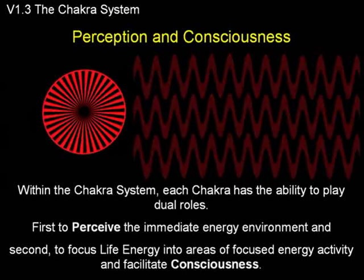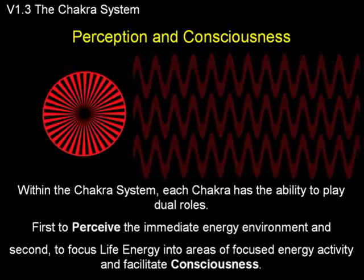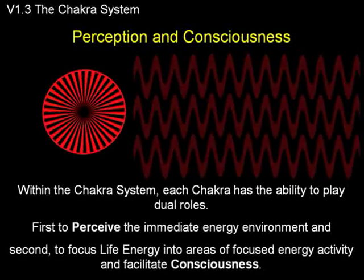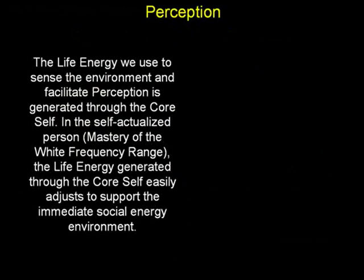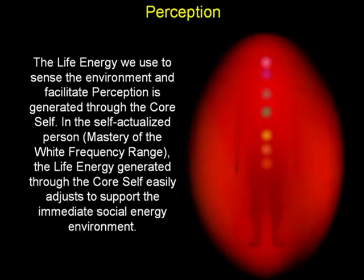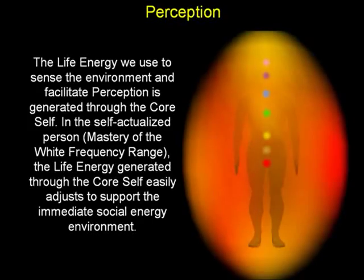Within the chakra system, each chakra has the ability to play dual roles: first, to perceive the immediate energy environment, and second, to focus life energy into areas of focused energy activity and facilitate consciousness. The life energy we use to sense the environment and facilitate perception is generated through the core self. In the self-actualized person, the life energy generated through the core self easily adjusts to support the immediate social energy environment.